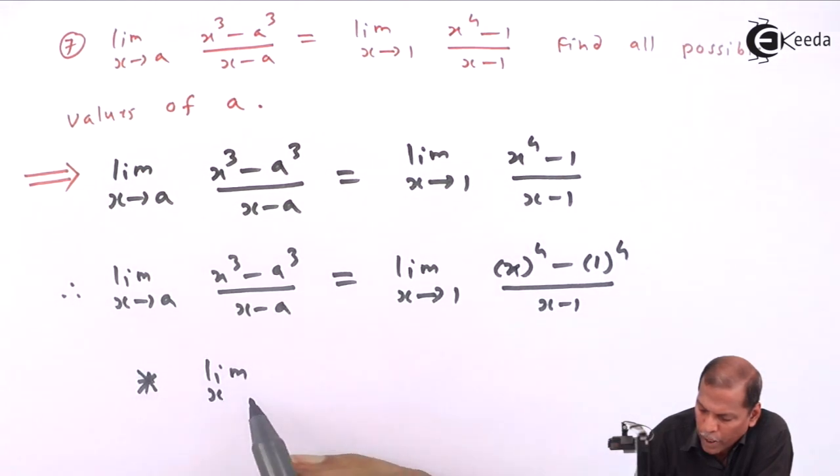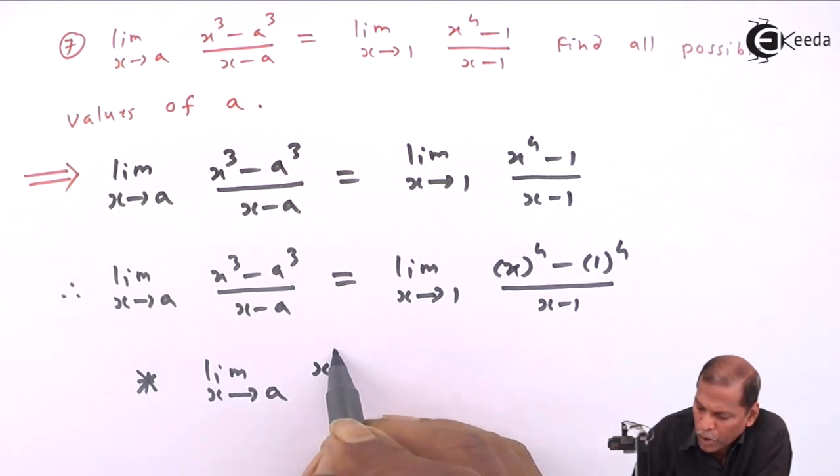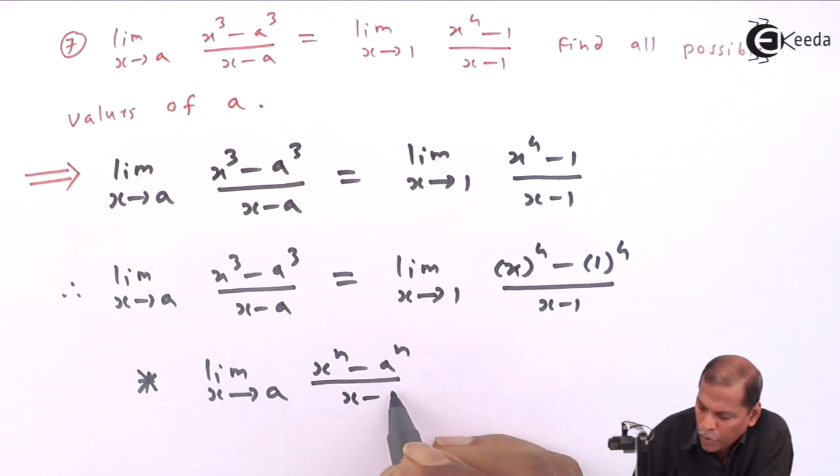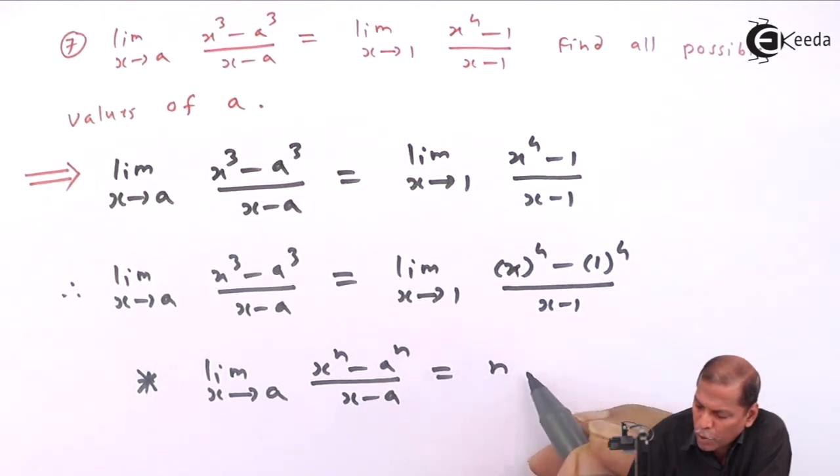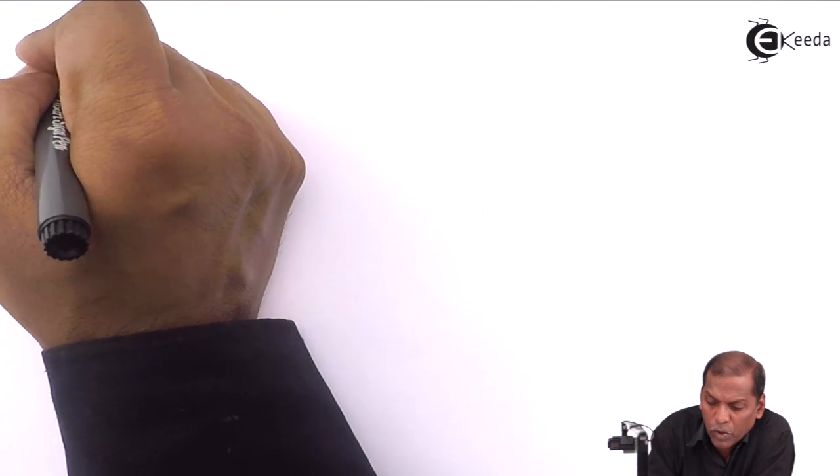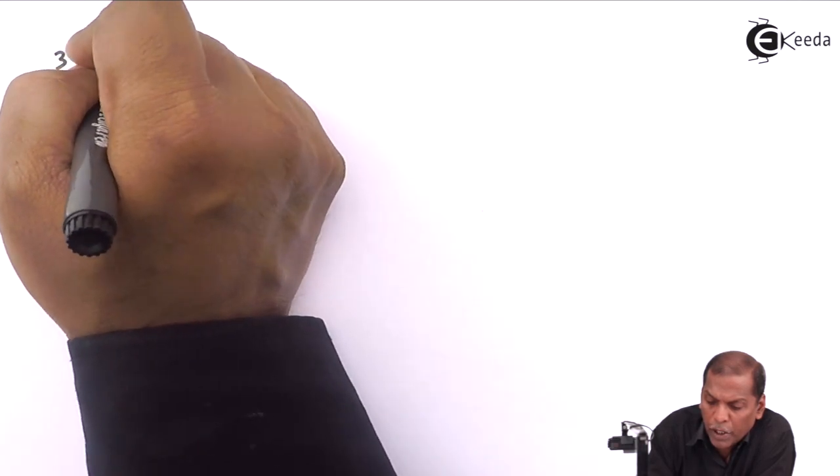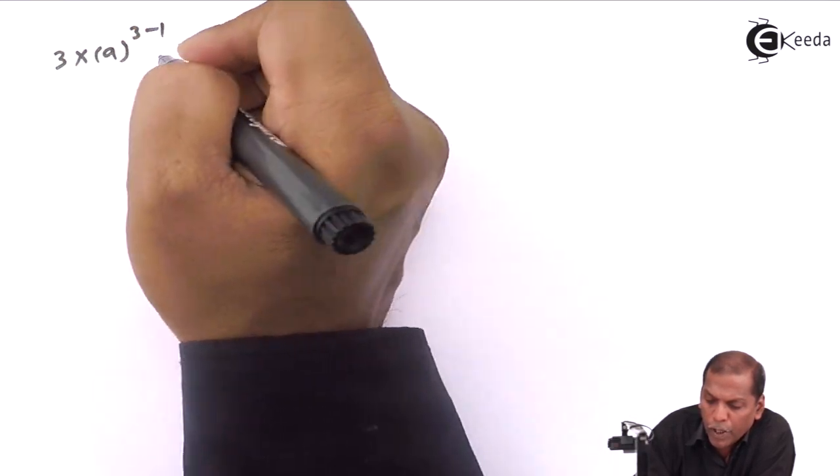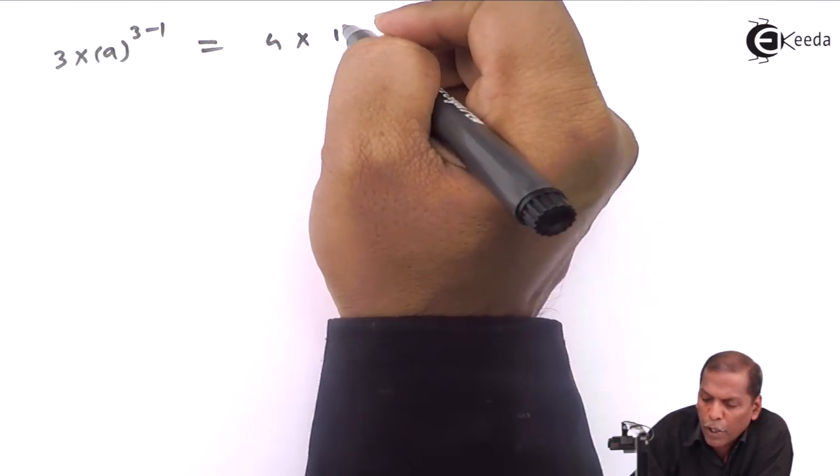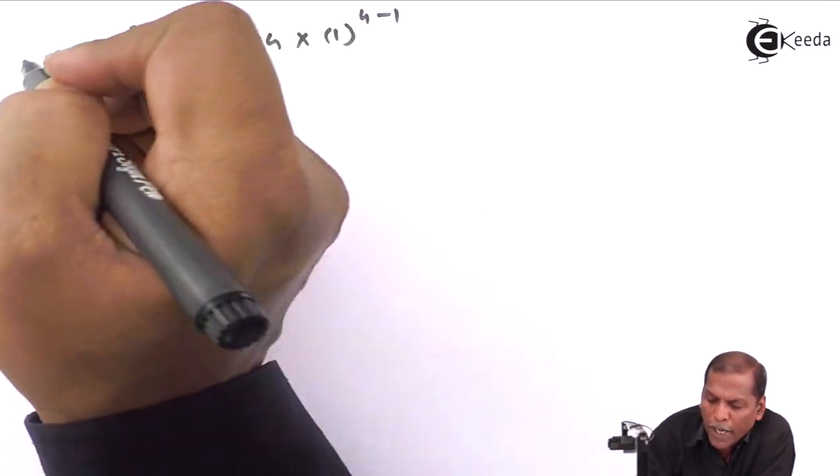Now here we have to apply the formula that limit x tends to a of x to the power n minus a to the power n upon x minus a equals n times a to the power n minus 1. So by using this formula in the above step, we get 3 times a to the power 3 minus 1, and that equals 4 times 1 to the power 4 minus 1.